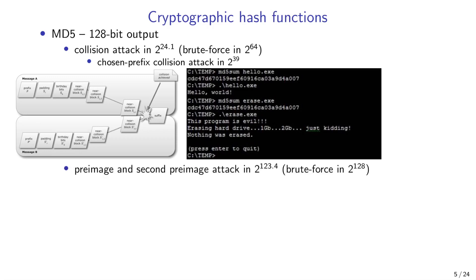MD5 is still relatively secure against preimage and second preimage attacks. Researchers have found a theoretical preimage attack requiring 2^123 operations, which is a very small improvement compared to the theoretical security level of 128 bits. For preimage attacks, the theoretical security level equals the bit length of the hash function's output — so for 128-bit MD5, the theoretical security level against preimage and second preimage attacks is 128 bits.